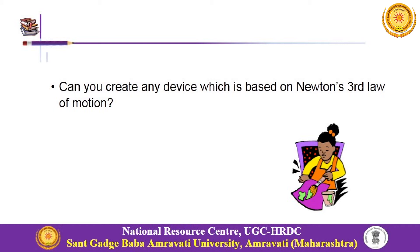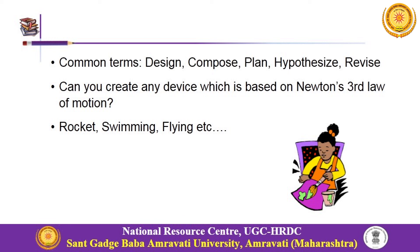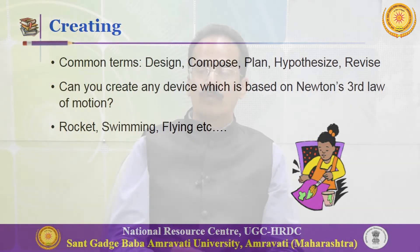Then comes the final stage — if we are aiming for our students to be able to create a new device based on the third law of motion, to make some instrument like a rocket, something that can swim or fly, or design something using this law, then we are aiming at the creating level of cognitive learning.